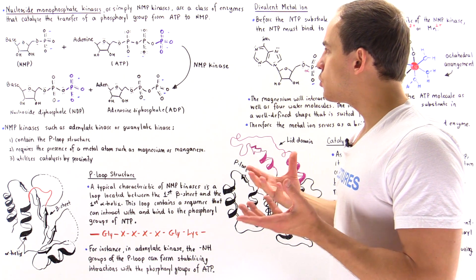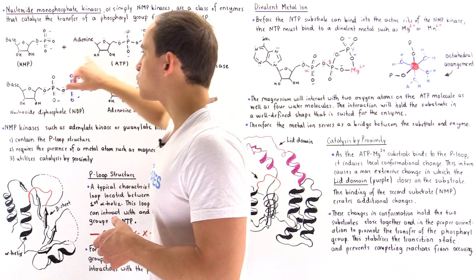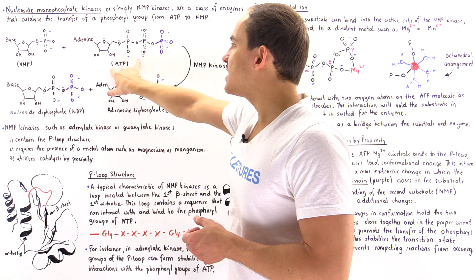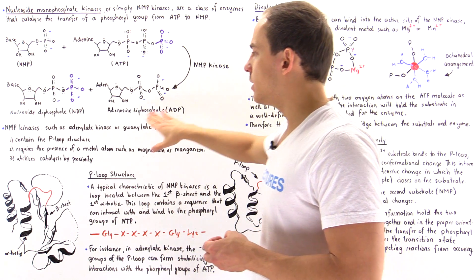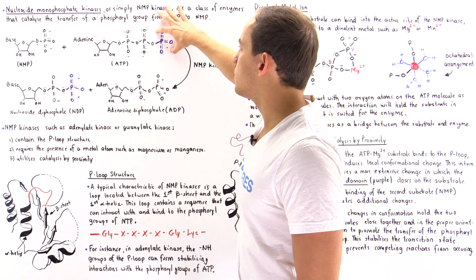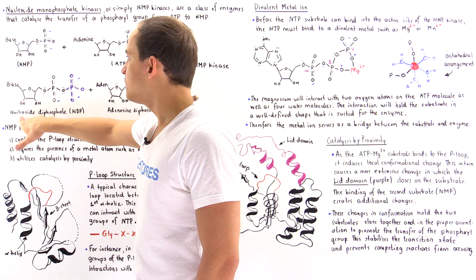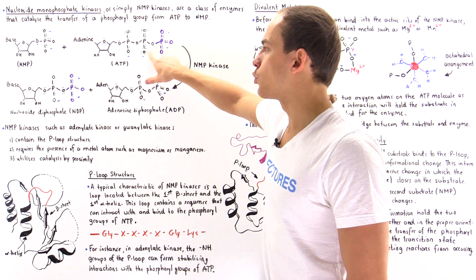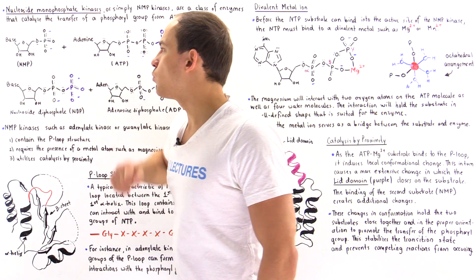To show what that means, let's look at the following general chemical equation. We have two reactant substrate molecules, and this reaction is catalyzed by some type of NMP kinase. Because we're using ATP as the specific nucleoside triphosphate, the name of this NMP kinase is adenylate kinase. Adenylate kinase catalyzes the transfer of the terminal phosphoryl group from ATP onto the nucleoside monophosphate, ultimately forming the nucleoside diphosphate and adenosine diphosphate. So ATP loses a phosphoryl group and the NMP gains one.